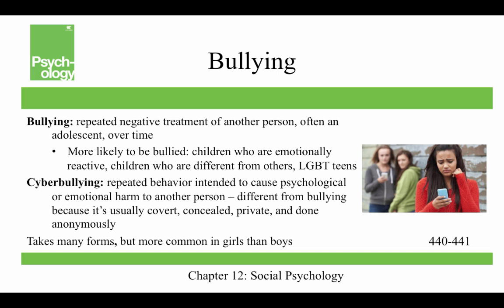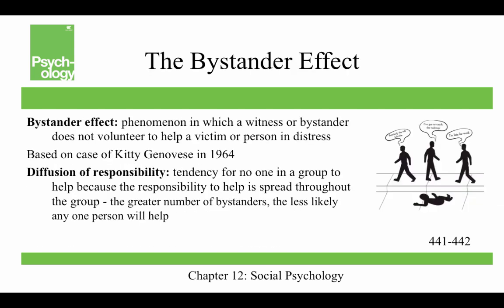Bullying is the repeated negative treatment of another person — often an adolescent — over time. A one-time push on a playground would not be considered bullying. People more likely to be bullied include children who are emotionally reactive, children who are different from others, and LGBTQ teens. Cyberbullying is repeated behavior intended to cause psychological or emotional harm to another person, and it's different from bullying because it's usually covert, concealed, private, and done anonymously. It takes many forms and is more common in girls than boys.